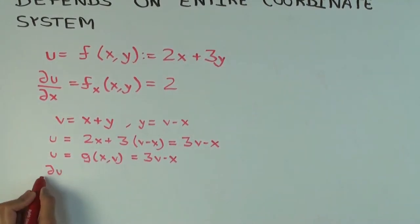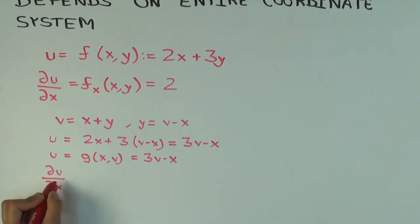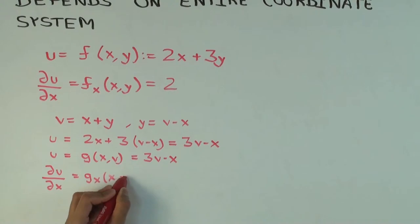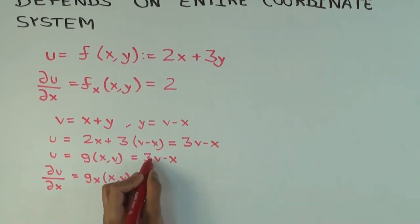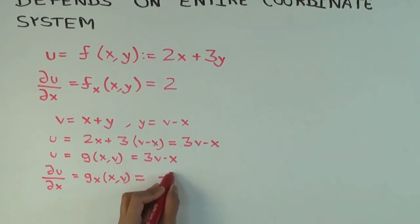So what's du dx now? Minus 1. Minus 1. Because 3v differentiates to 0, so you get minus 1.